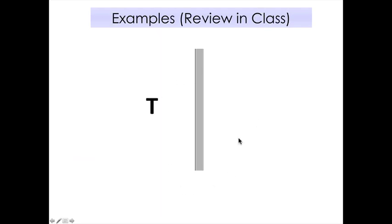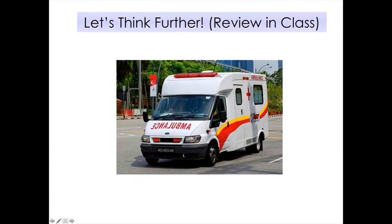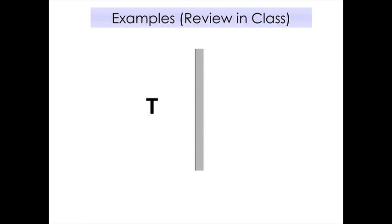Try these examples at home and bring them to class to check your answers. The middle line represents the mirror front; the slanted lines represent the back. For a T-shaped object placed in front of the mirror, will the image be upright or inverted? For a letter B, will the image look the same, be laterally inverted, bigger, or smaller? Figure it out on your own and we'll go through it in class.